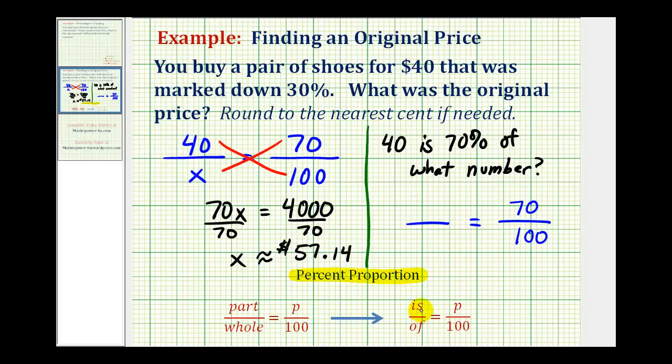And then for the other ratio, we can think of it as is to of, or is over of. And because it says 40 is, the 40 has to be on top. So the ratio is going to be 40 to the unknown, which is x.